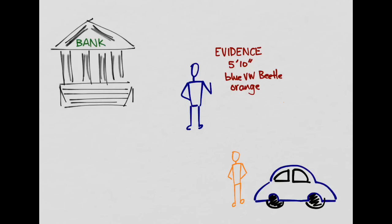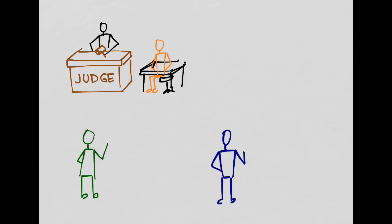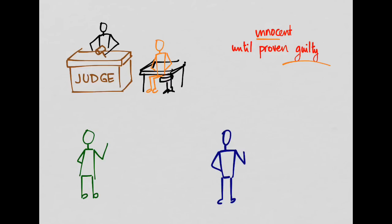Your hypothesis is that this is the guilty person. Now it's time to go to court. In our court system, we have the adage that someone is innocent until proven guilty. So even though we brought this guy to court because we think he's guilty, in the courtroom he is innocent until proven otherwise. The hypothesis here is that he is innocent.